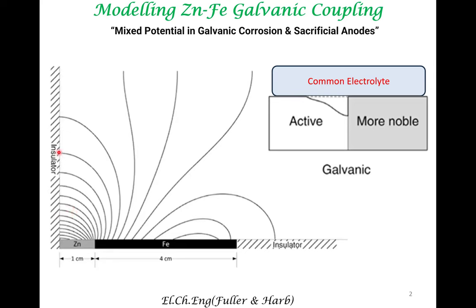This is an insulator, so there cannot be any current that is getting through the insulator. Therefore, there cannot be any gradient of potentials. So when you go in this direction, there is no gradient, and therefore there cannot be any current in this region. And typically, when there is larger gradient, we say that there is greater current.